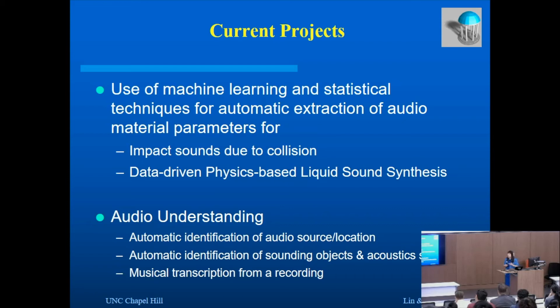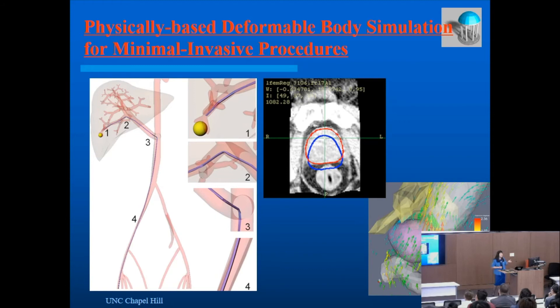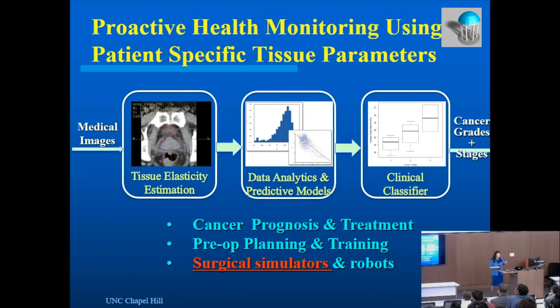Can we automatically identify interesting audio source locations, identify objects, and determine what events are happening in a scene? We're also looking at interesting problems like transcribing a musical piece directly from a single recording. Similarly, we can extend these ideas to deformable body simulations. Some projects we've been looking at include how to help surgeons navigate catheter insertion into the human body to deliver chemotherapy drugs, and most recently whether we can automatically extract tissue properties directly from CT scans to help diagnose cancer stage and disease progression — work supported by NIH.